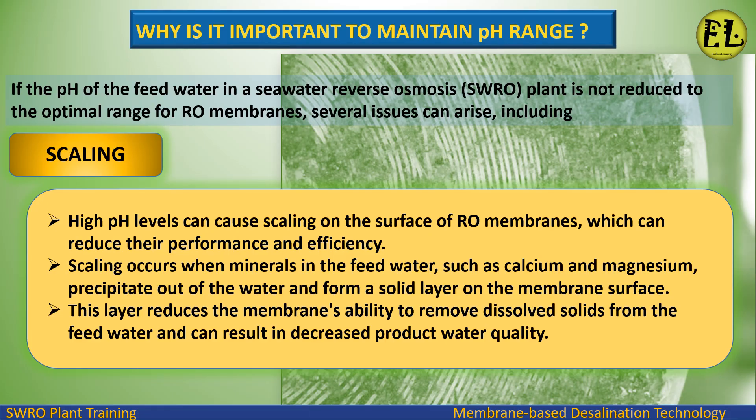Why is it important to maintain pH range? If the pH of the feed water in a seawater reverse osmosis plant is not reduced to the optimal range for RO membranes, several issues can arise, including scaling. High pH levels can cause scaling on the surface of RO membranes, which can reduce their performance and efficiency.